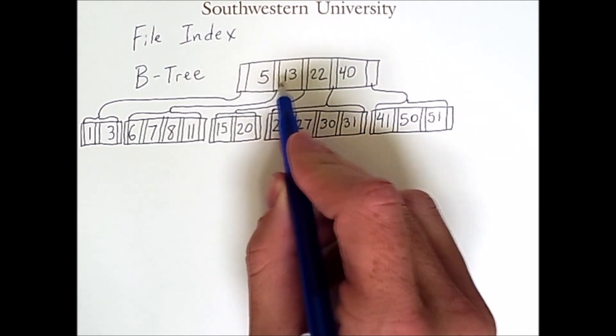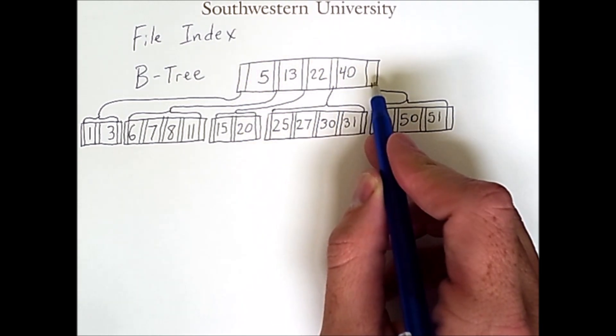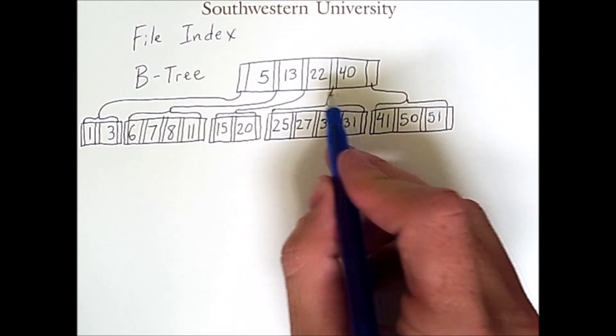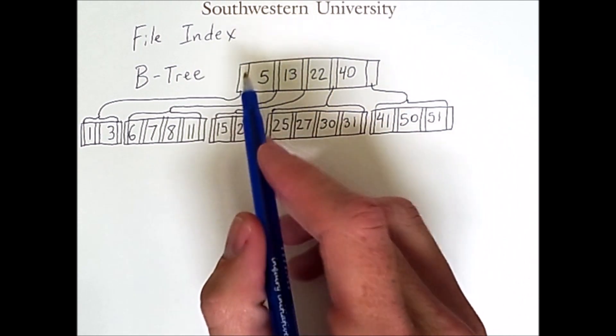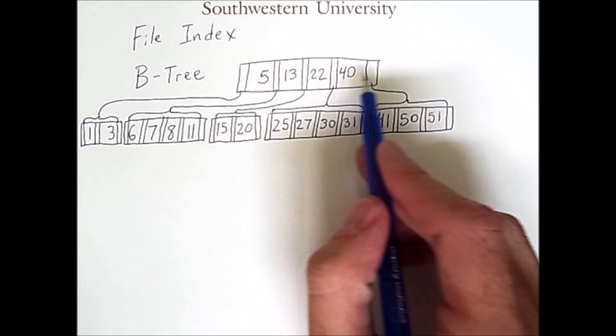Now, each of these little narrow slots are pointers to child nodes. So for these one, two, three, four keys, there are one, two, three, four, five children.